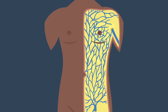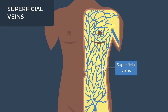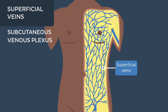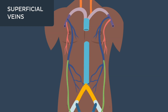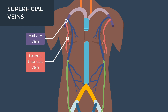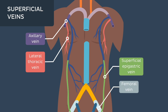The superficial veins form a network known as the subcutaneous venous plexus that radiates out from the umbilicus. This subcutaneous venous plexus drains regions of the thoracic wall superiorly and medially to the axillary vein via the thoracoepigastric and lateral thoracic veins, and regions of the abdominal wall inferiorly and laterally to the femoral vein via the superficial epigastric vein.